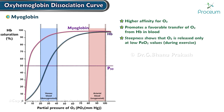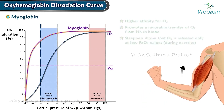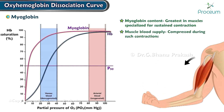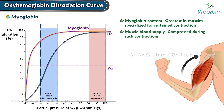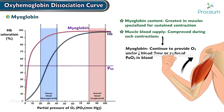The steepness of the myoglobin curve also shows that oxygen is released only at low partial pressure of oxygen values, for example during exercise. The myoglobin content is greatest in muscles specialized for sustained contraction. The muscle blood supply is compressed during such contractions, and myoglobin can continue to provide oxygen under reduced blood flow and/or reduced partial pressure of oxygen in the blood.